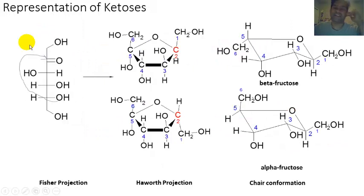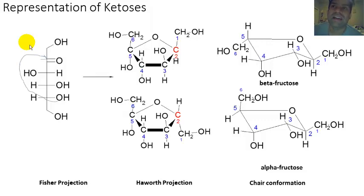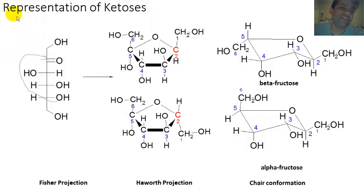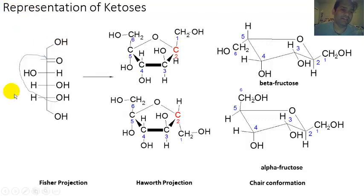The same thing works for ketoses as well. We talked about hexoses in the previous slide — that includes glucose, but it could also include galactose, mannose, and all the other six-carbon isomers of glucose. We can also do this for ketoses, which would go through a hemi-ketal intermediate as opposed to a hemiacetal intermediate. Here's your ketone group in the Fischer projection; again, about 1% of the population is in linear form.